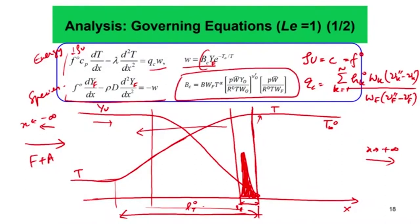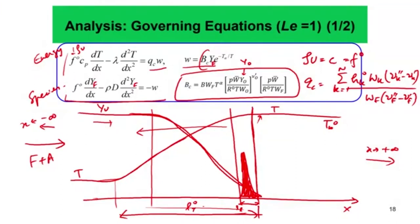Now we normalize: Ỹ = Y/Y_u, x̃ = x/L_D where L_D = λ/(C_p · F_0 · Y_u), and T̃ = C_p · F_0 · T (normalized temperature). Applying these normalizations to the energy equation gives: d²T̃/dx̃² − dT̃/dx̃ = −Da_c · Ỹ · exp(−T̃_A/T̃), where Da_c is the Damköhler number defined as (λ/C_p)/F_0² · B_c.